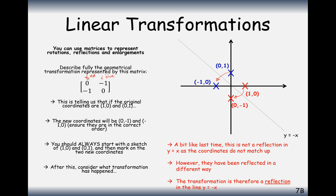So hopefully we're getting used to this notation: the coordinate (1, 0) will always go to the first column, and the coordinate (0, 1) will always go to the second column. The second column will always be the blue coordinate and the first column will always be the red coordinate.